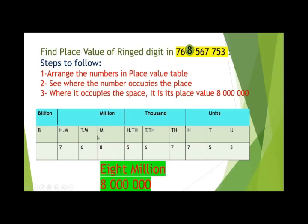So its place value is eight million. Is it an easy method to find out the place value? Arrange the numbers in the place value table, see where the number occupies the place, and where it occupies the place — that is its place value. It takes the place value in the million box, so its value is eight million, written as 8,000,000.